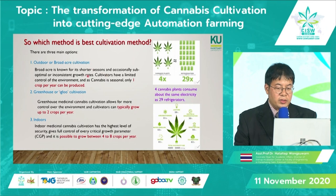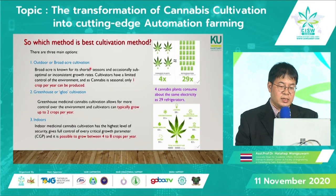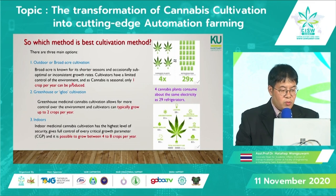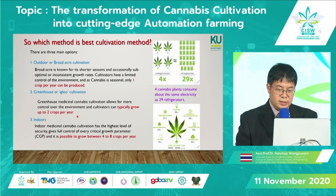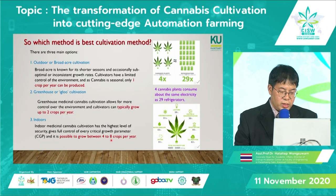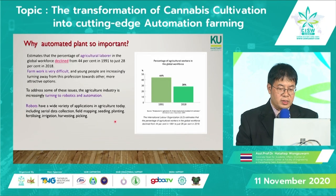According to the pure yield challenge, the best cultivation method will be indoor growing. Unlike outdoor cultivation, which produces only one crop per year, and unlike greenhouse cultivation, which yields up to two crops per year, growing cannabis indoors provides the possibility of four to eight crops per year.